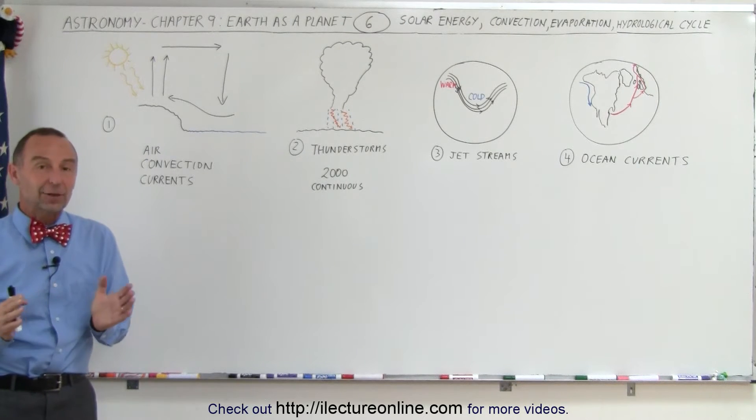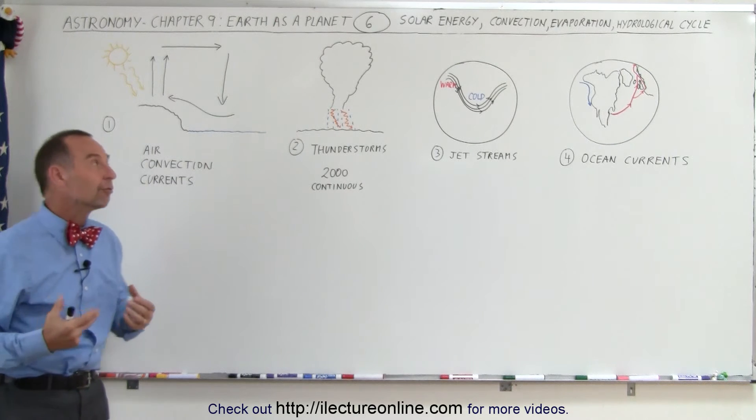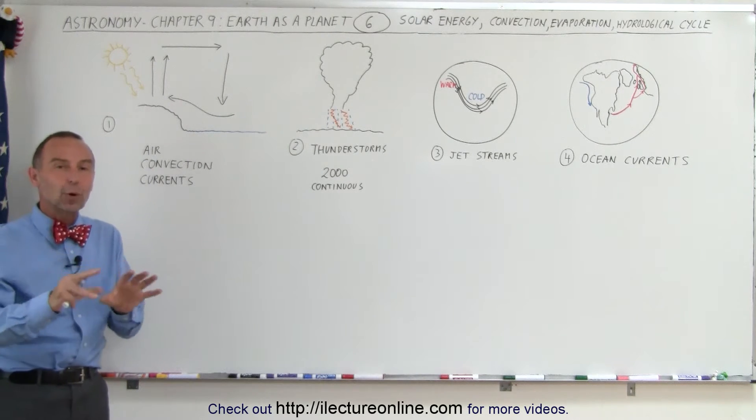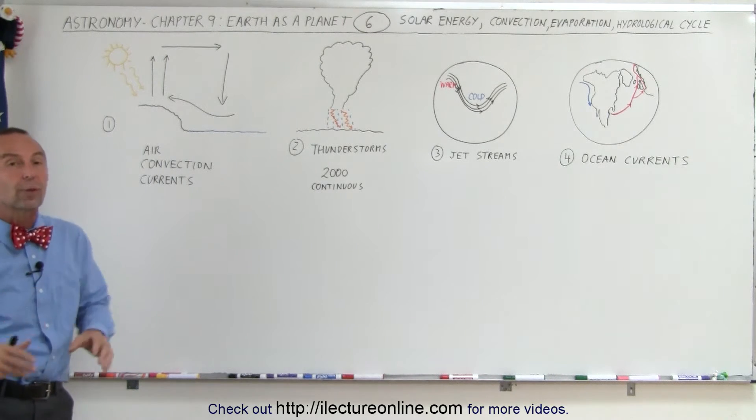Welcome to ElectronLine. Now let's take a look and see how the solar energy from the Sun, as it comes to us in the form of radiation when it reaches the Earth, has an effect on both the air masses around the world, the atmosphere, and the oceans around the world.